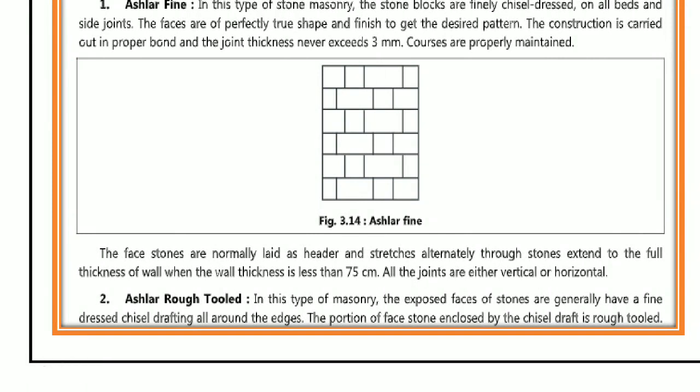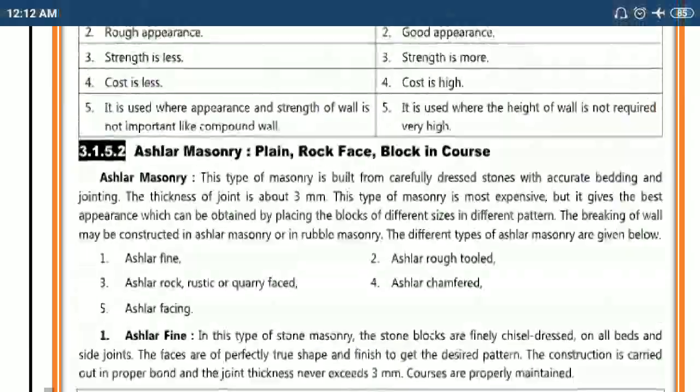Ashlar block in course masonry occupies an intermediate position between rubble masonry and Ashlar masonry. The thickness of mortar joints does not exceed 6 mm. That's it, thank you.